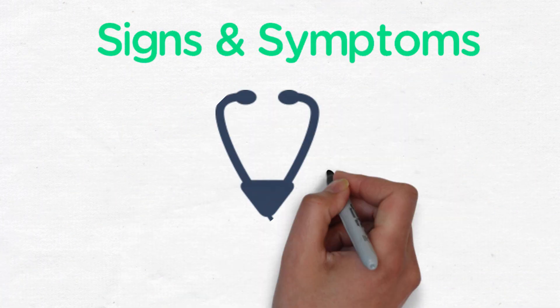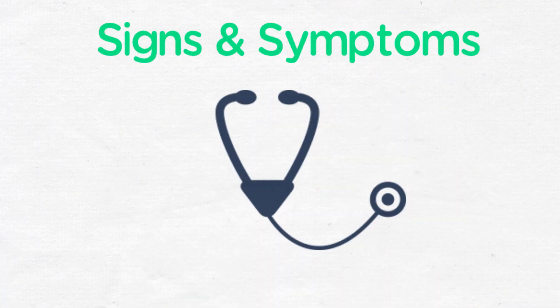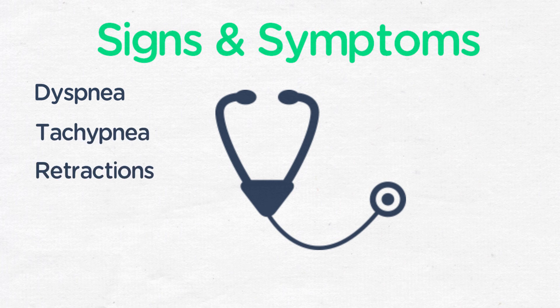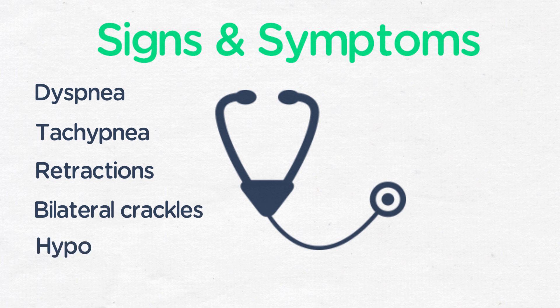Symptoms and signs of ARDS include shortness of breath, tachypnea, retractions, and respiratory distress. On exam, bilateral crackles, often with decreased breath sounds. In addition, the patient may have hypoxemia that may not respond to administered oxygen. The patient may also exhibit symptoms or signs of the underlying cause, for example, sepsis.